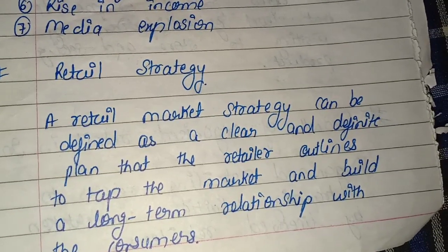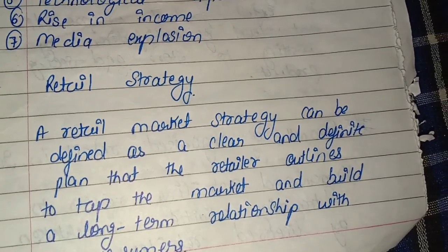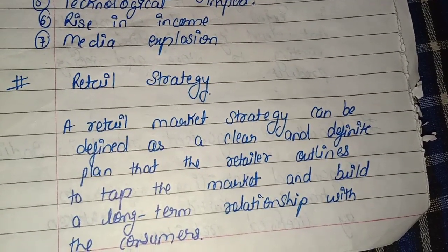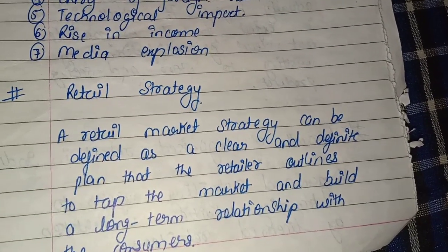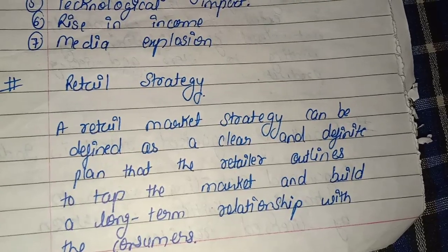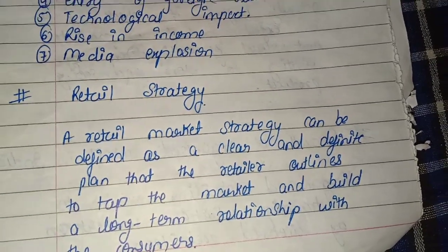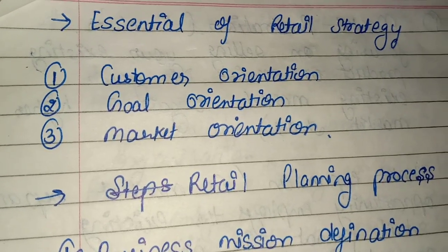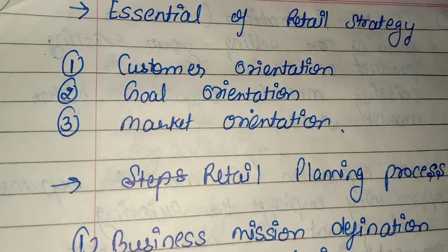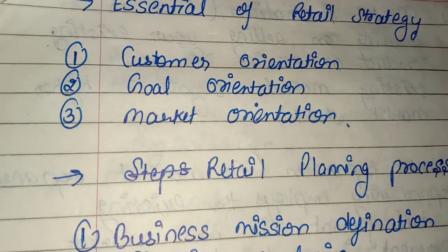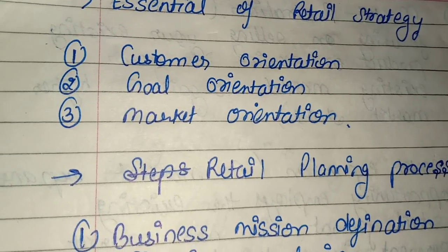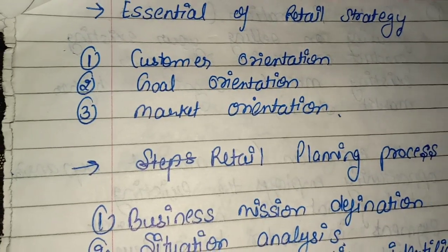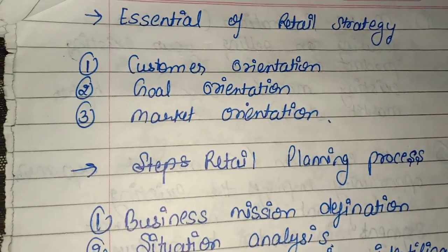The next topic is retail strategy. A retail market strategy can be defined as a clear and defined plan that the retailer outlines to tap the market and build a long-term relationship with the consumer. Retail strategy is basically about maintaining a long-term relationship with consumers so that existing customers remain and do not switch to any other product. The essentials of retail strategy include customer orientation, goal orientation, and market orientation — understanding our goal, our customer setup, and our targeted market.